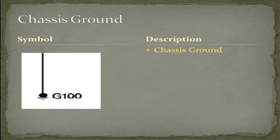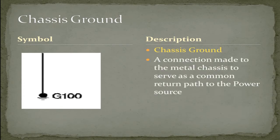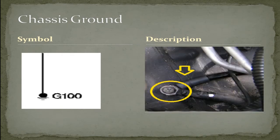The chassis ground. A connection made to the metal chassis to serve as a common return path to the power source. And here's an example of a common chassis ground.